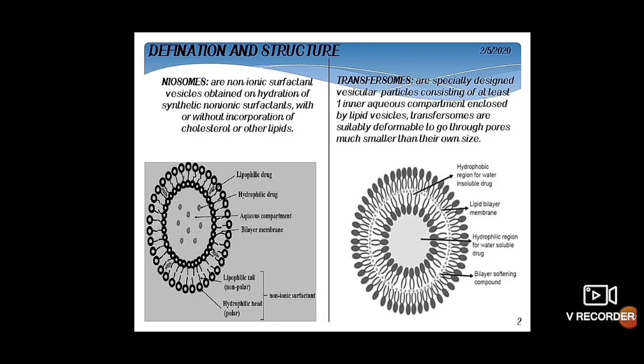Niosomes are non-ionic surfactant vesicles obtained on hydration of synthetic non-ionic surfactants, with or without the incorporation of cholesterol or other lipids. In the structure of a Niosome, there is a bilayer in which the polar heads face away from each other while the non-polar tails face toward each other. There is an aqueous compartment for incorporating hydrophilic drugs, while lipophilic drugs are incorporated in the bilayer membrane.